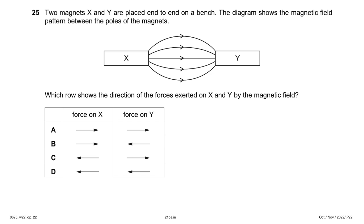Two magnets X and Y are placed end to end. The diagram shows X with its north pole on the right side facing Y's south pole on the left — so the force is attractive. Magnet X experiences a force toward Y, and Y experiences a force toward X. Answer: option B.